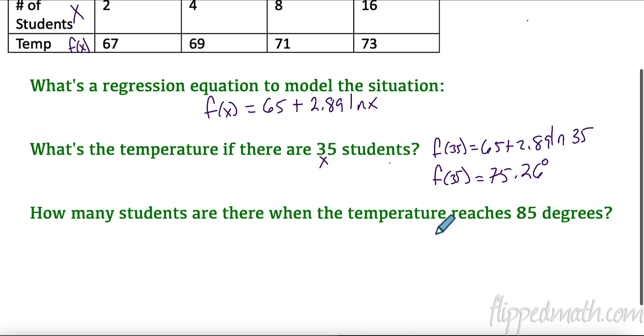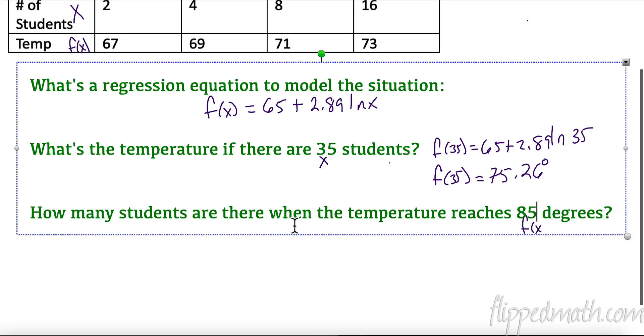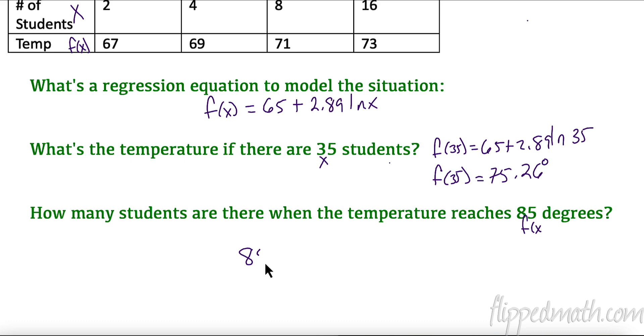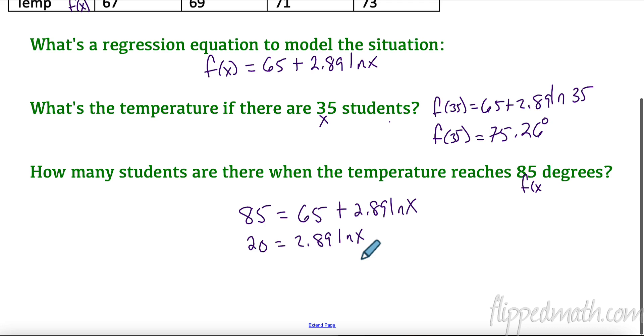How many students are there when the temperature is reaching 85 degrees? This is my f(x) so now I'm going to have to solve this. So I have 85 = 65 + 2.89 ln(x). I don't know how many students. First thing I need to do is subtract 65, so I have 20 = 2.89 times the natural log of x. Now I'm going to divide this but I'm not going to actually divide it out.